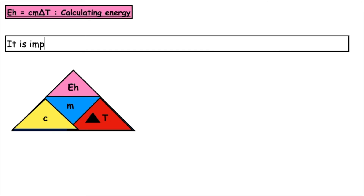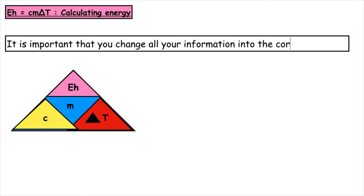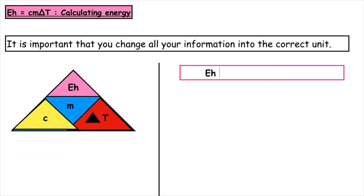When we're using the energy triangle, it is important that you change all of your information in the question into the correct units. For Eh, which is energy released, we always measure that in kilojoules.